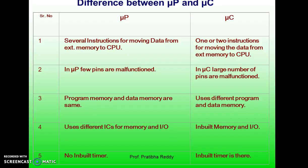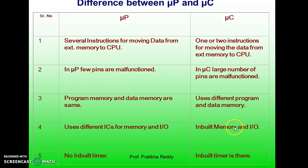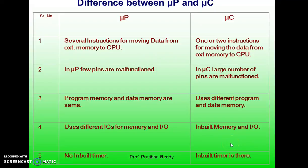These are some feature differences between microprocessor and microcontroller. In microprocessors, there are several instructions for moving data from external memory to CPU, while in microcontrollers, hardly one or two instructions are needed for this. In microprocessors, few pins are multiplexed; in microcontrollers, a large number of pins are multiplexed. In microprocessors, program memory and data memory are the same — a Von Neumann architecture — while microcontrollers use different program and data memory. Microprocessors use different ICs for memory and IO, whereas microcontrollers have inbuilt memory and IO. Microprocessors have no inbuilt timer, but microcontrollers have an inbuilt timer.